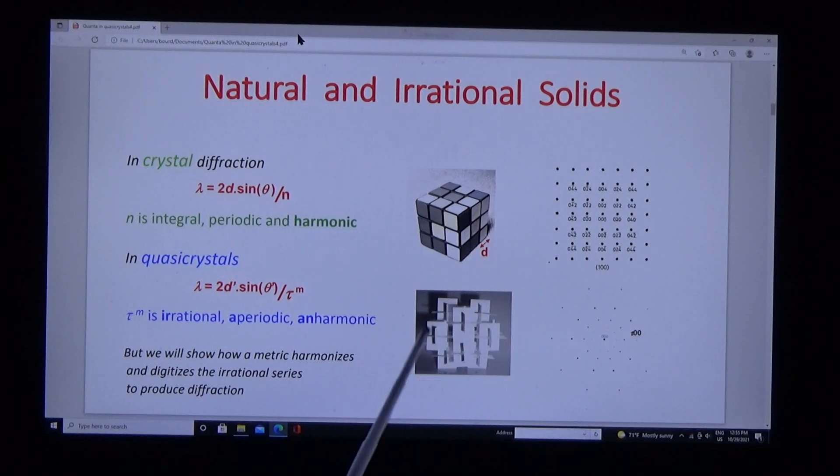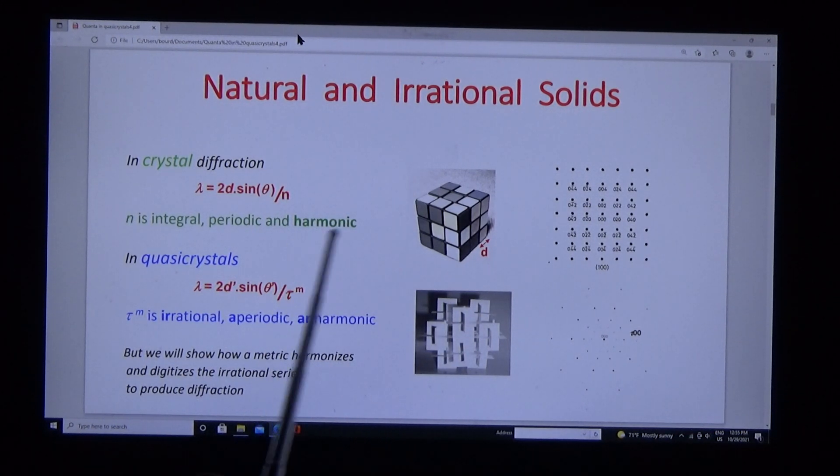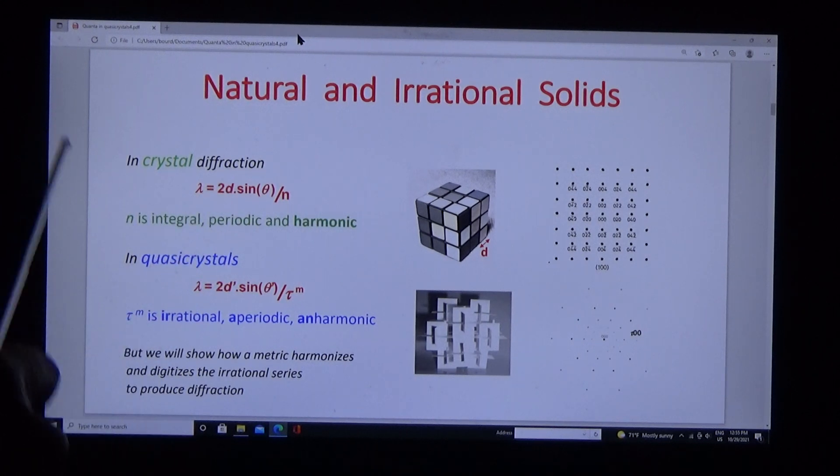Quasi-crystals are completely different. N is geometric: 0, 1, tau, tau squared, tau cubed, tau to the fourth. Tau is irrational, aperiodic, anharmonic—everything that crystals are not.